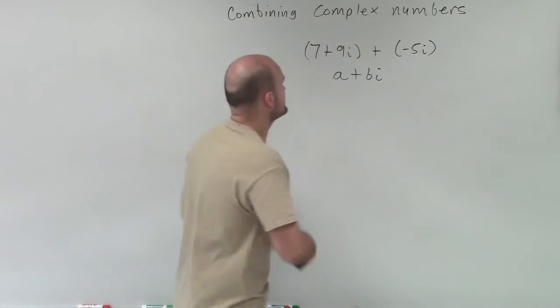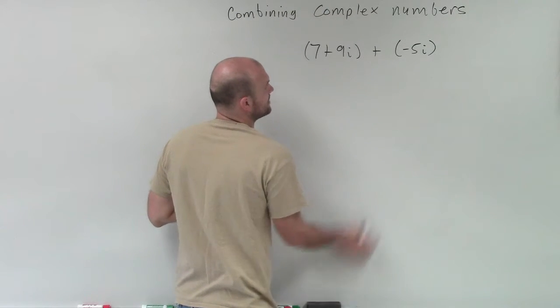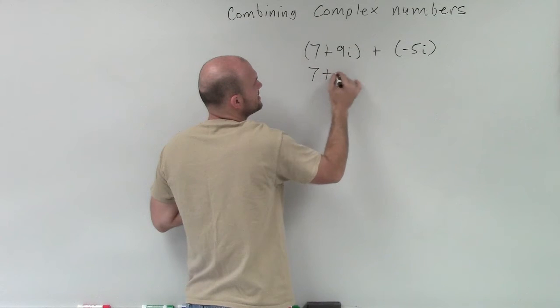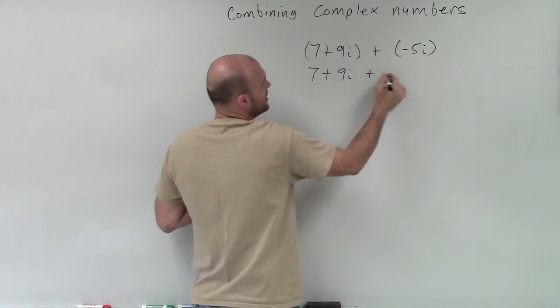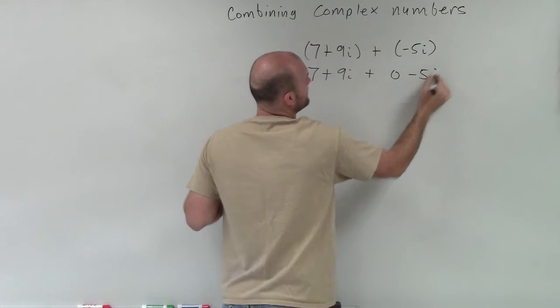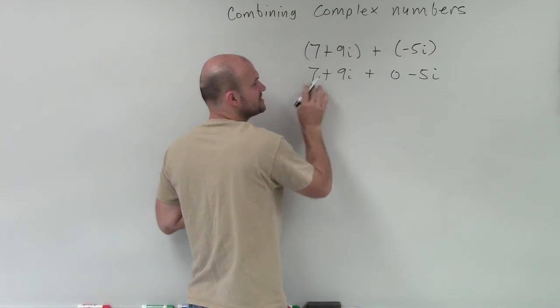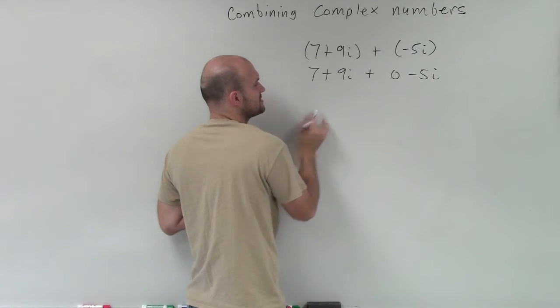So you see in this example that I have a 7, but here I don't have any real portion to this. So we could call it 0. So I can rewrite this as 7 plus 9i plus 0 minus 5i, where we could say 0 would be the real component of this complex number, and 7 is the real component of this complex number.